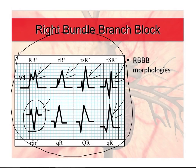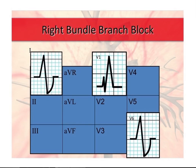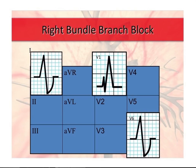These are all right bundle branch block morphologies. What I left out last time is that with a true right bundle branch block, the last wave in lead 1 and in lead V6 should be negative — it should be a slurred S wave, as the textbooks call it. I'll give you some intuition behind why that happens.